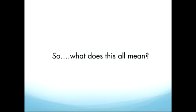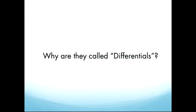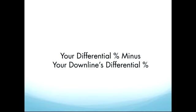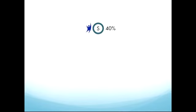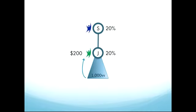Okay, so what does all this mean? First of all, why are they called differentials? It's quite simple, really. You receive the difference between what your downline has earned and what you are qualified for. So, if you're a Sapphire earning 40%, and someone below you ranks up to Jade, the new Jade would get 20% on their own volume, and you would get 20% on the volume under that Jade. So, if there were a thousand VV under the Jade, they would be paid $200, and you, as a Sapphire, would also be paid $200.